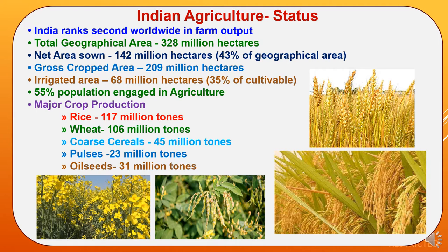First we will go through Indian agriculture status. India ranks second worldwide in farm output because the major population of India is engaged with farming and agricultural activity. The total geographical area of our country is around 328 million hectares, out of which the net sown area is 142 million hectares, which comprises 43% of geographical area. The gross cropped area is around 209 million hectares, out of which the irrigated area is only 68 million hectares, which is 35% of cultivable land.